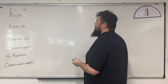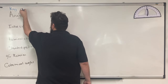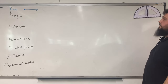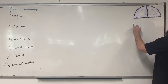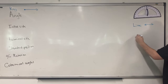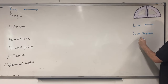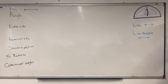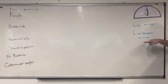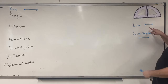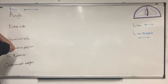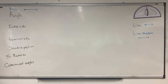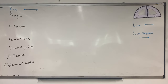A ray has a defined starting point - it originates from there, there's nothing in the opposite direction, and it continues forever. This distinguishes a ray from a line, as a line continues in both directions forever, versus a line segment which has both a terminal and starting point that are defined. We can't measure the ray or the line since they continue forever. In geometry we focus mostly on line segments, but we're more conceptual in this class, so rays are where we're starting.